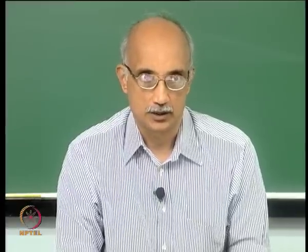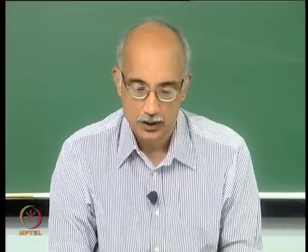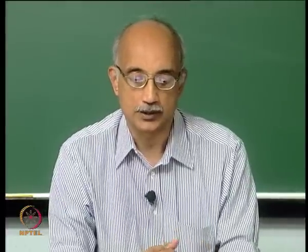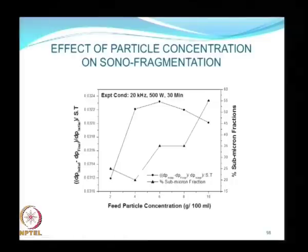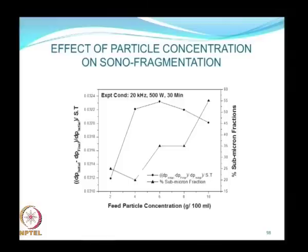Welcome to the 31st lecture in our particle characterization course. In the previous lecture, we looked at various methods of synthesis of nanoparticles. Initially, we discussed bottom-up approaches and later, we started reviewing methods for making nanoparticles by a top-down approach, which is where you start with particles that are larger in size and then fragment them to smaller dimensions. In particular, we looked at high-energy ball milling as a method that can be used for making fine particles.